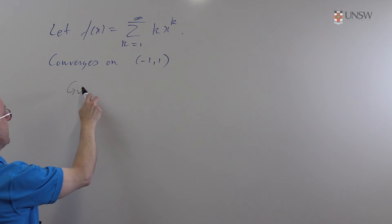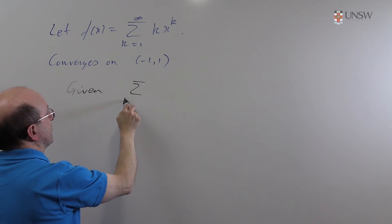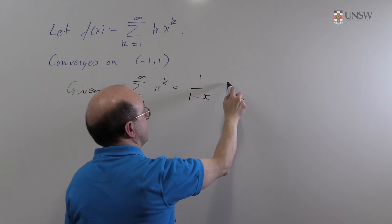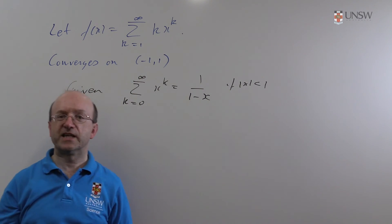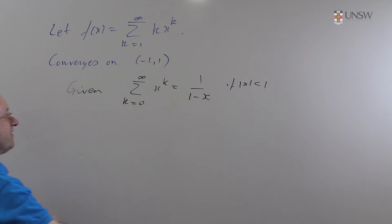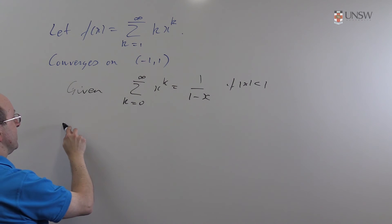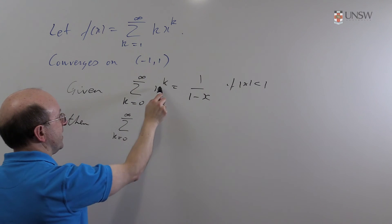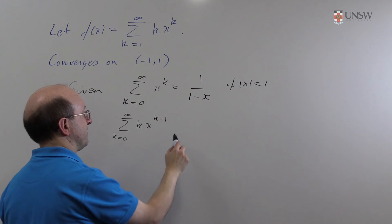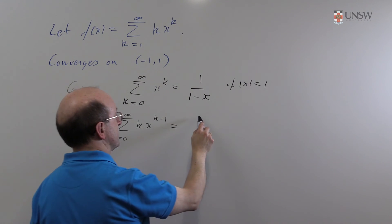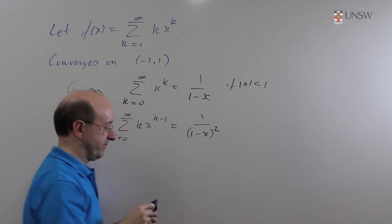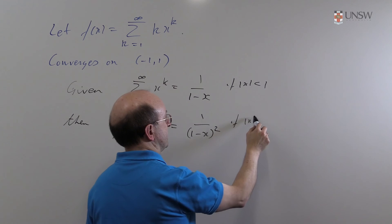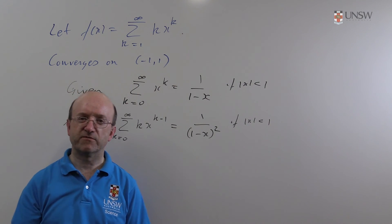So we are given that the sum from k is 0 to infinity of x to the k is 1 over 1 minus x, if mod x is less than 1 — which is in fact the same region on which we know this particular function exists, because this is where the series is convergent. Then we can differentiate both sides term by term, and we get the sum from 0 to infinity of k x to the k minus 1 on the left, and 1 over 1 minus x squared on the right. Usually a good idea to keep track of where these series are convergent: if mod x is less than 1.